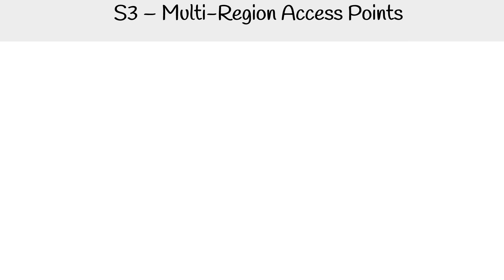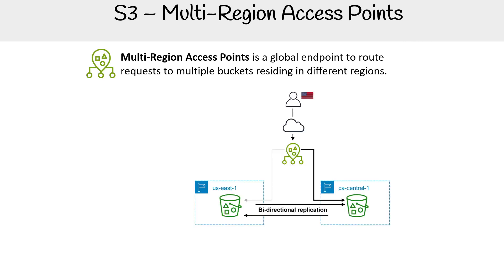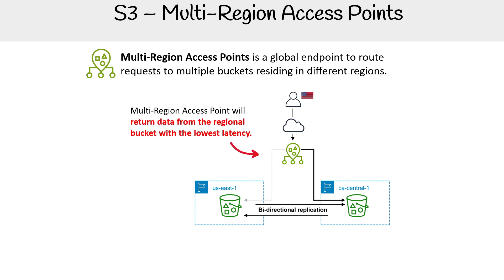Multi-region access points is a global endpoint to route requests to multiple buckets residing in different regions. Imagine you have two buckets with bi-directional replication on them — you can have whatever replication you want, but that's usually a good pairing. And you want to serve data that is going to provide the lowest latency.